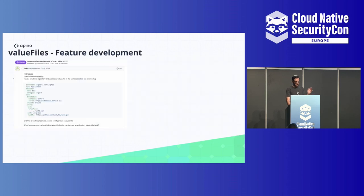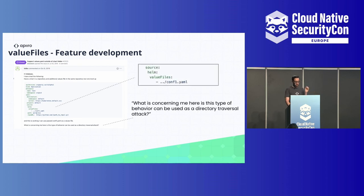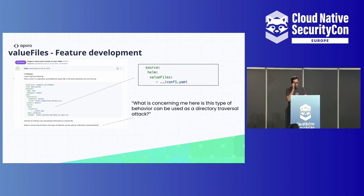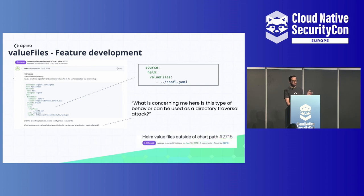Why this caught our eyes: the repositories held on the Argo CD system reside in the repo server pod, which is monolithic with a very deterministic file structure. You can predict those file structures if you know the application name — that's all you need. So with some kind of path traversal to another file, you can read other files on the system. In 2019, a developer on a thread wrote: 'What is concerning me here is this type of behavior — it can be used as a directory traversal attack.' He was completely right.